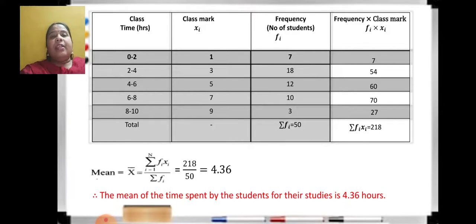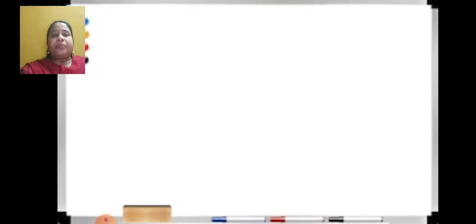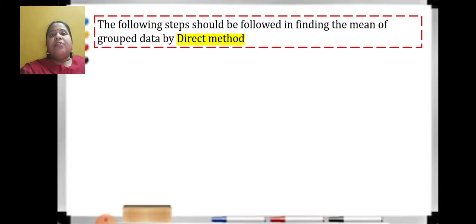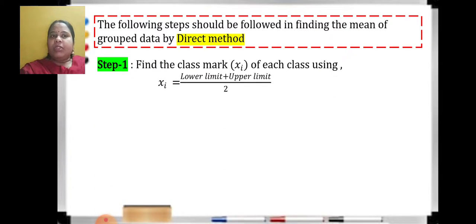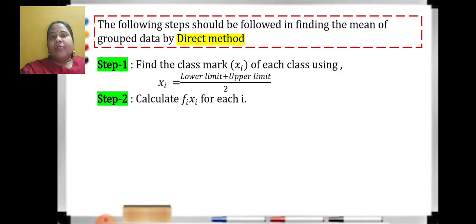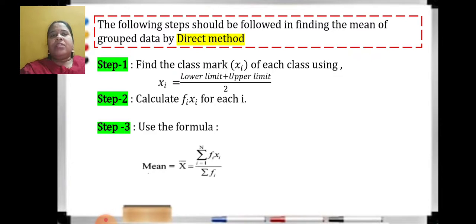This method of finding mean is the direct method, and you only need to learn one method — direct method. Assume mean and step deviation methods are omitted. For direct method, remember three basic steps: Step 1 — find the class mark using lower limit plus upper limit upon 2. Step 2 — calculate fi xi for each value of i. Step 3 — apply the formula: mean x-bar equals summation of fi xi upon summation of fi.